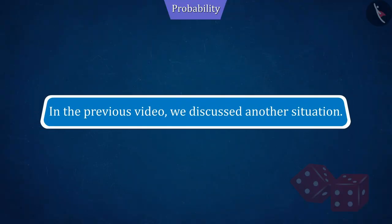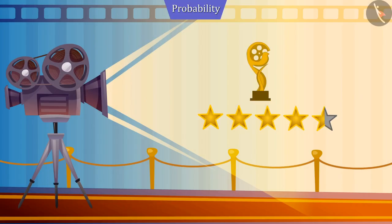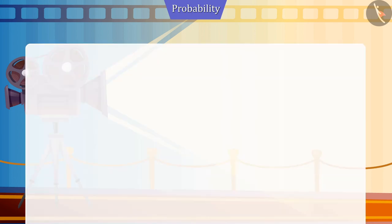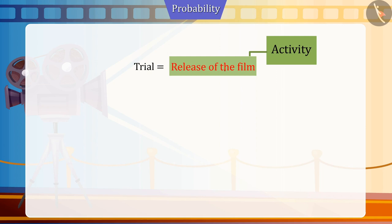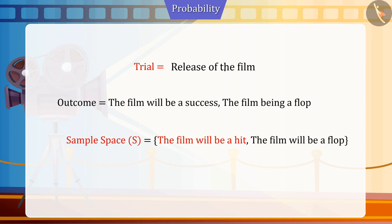In the previous video, we discussed another situation about the possibilities of success of a film releasing next week. Can you tell what would be the sample space for this situation? The release of the film is an activity, so it will be called a trial. There may be two possibilities upon the release of the film. First, the film will be a hit. Second, the film will be a flop. These will be the two outcomes, and the sample space will be set S.